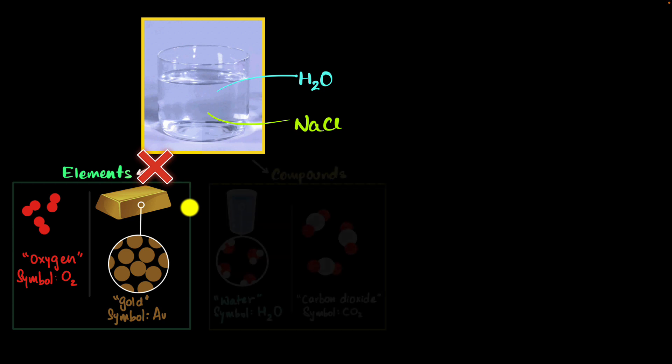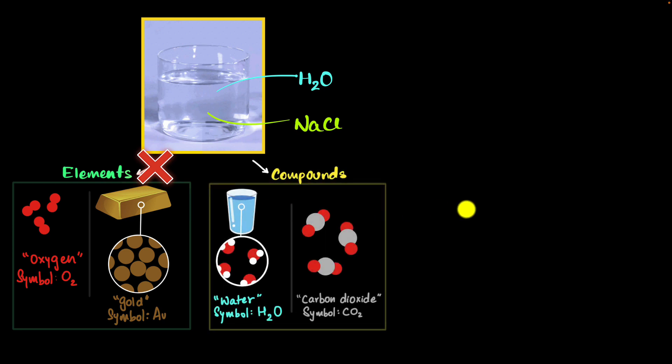What else could it be? What about compounds? Remember, in compounds, two or more atoms are chemically bonded in fixed ratios. For example, water is a compound because hydrogen and oxygen are chemically bonded in the ratio 2 is to 1. Two hydrogen for every oxygen.